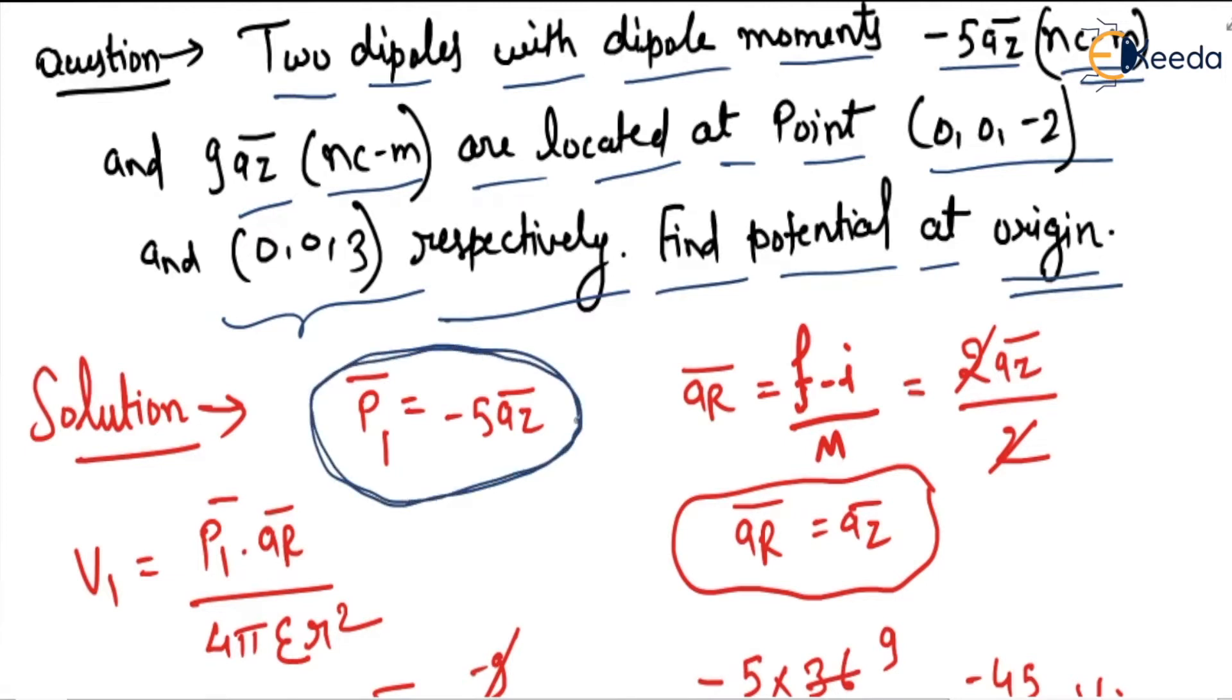which is p1, is given as -5az. We calculate ar vector as final minus initial divided by magnitude. We have to calculate potential at origin, which means (0,0,0), so this is our final point, and (0,0,-2) will be our initial point.